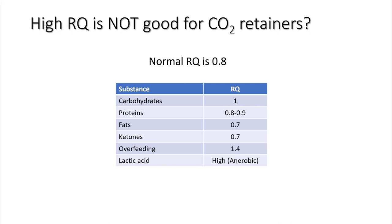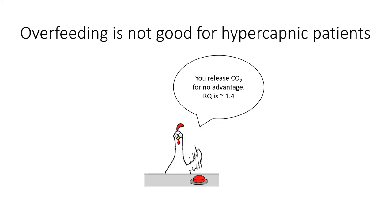Carbohydrates have a respiratory quotient of 1 while fats have a respiratory quotient of 0.7, so fats will produce less carbon dioxide compared to carbohydrates. Overfeeding, on the other hand, has a respiratory quotient of 1.4, so try to avoid overfeeding your patients.